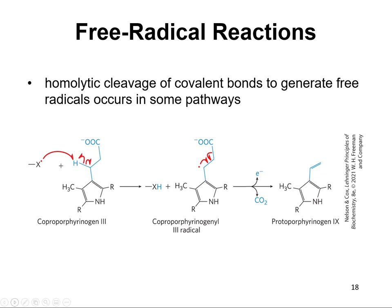The next group is free radicals. Homolytic cleavage of a covalent bond will generate free radicals, and that does happen in some metabolic pathways. Remember, homolytic cleavage means each atom from the bond carries away an unpaired electron. This is very unstable and less likely to happen, but it does occur in biological systems.